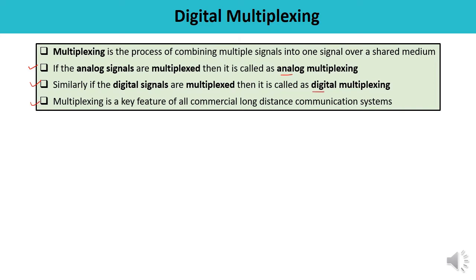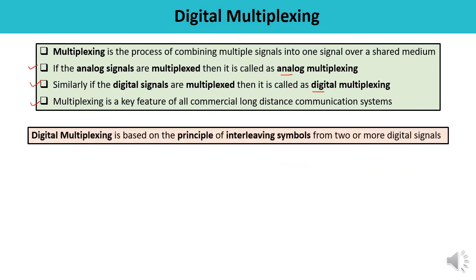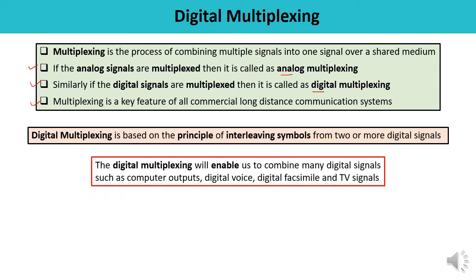Multiplexing is a very important feature which is used in all commercial long-distance communication systems. Digital multiplexing is based on the principle of interleaving symbols from two or more digital signals. Digital multiplexing enables us to combine many digital signals such as computer outputs, digital voice, digital facsimile, and TV signals. This is how multiplexing can be utilized in a number of applications very effectively.